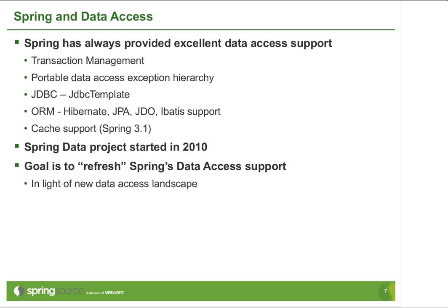Spring has always provided great data access support from the beginning — features such as declarative transaction management, portable data access exception hierarchies, helper classes such as JDBC template, and integration and support for various ORMs such as Hibernate and JDO. Most recently, in Spring 3.1, there were also new features related to declarative caching support. In reaction to all the changes occurring in the data access landscape, the Spring Data project was started with the idea to refresh Spring's data access support — covering not just relational databases, but NoSQL and Big Data as well.